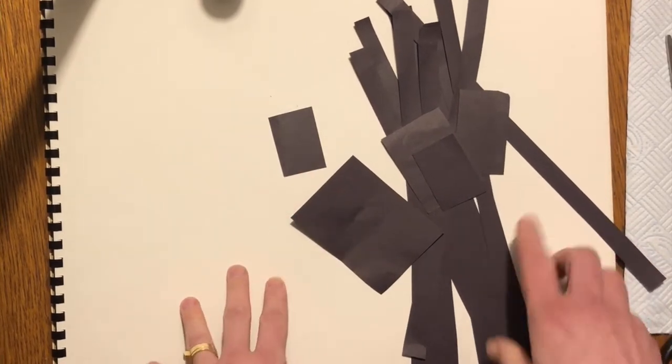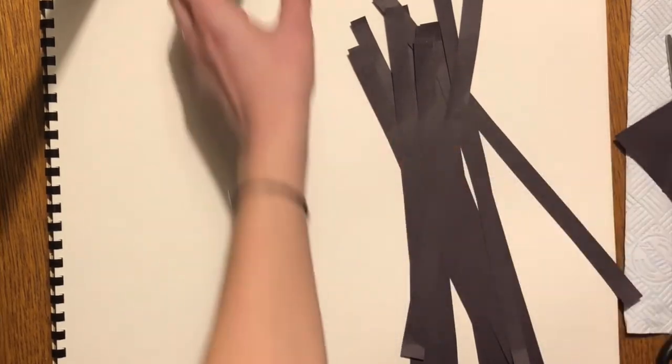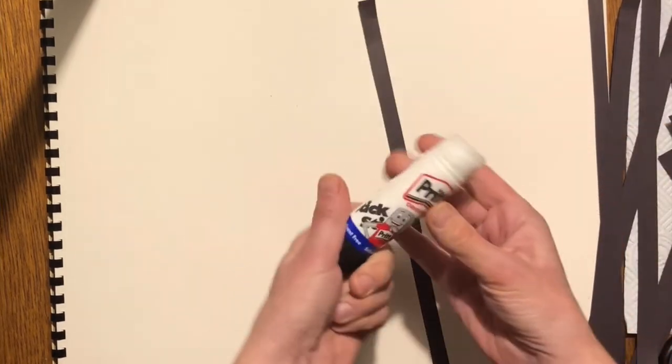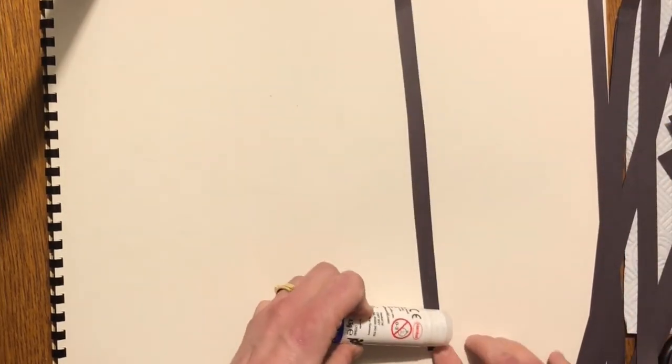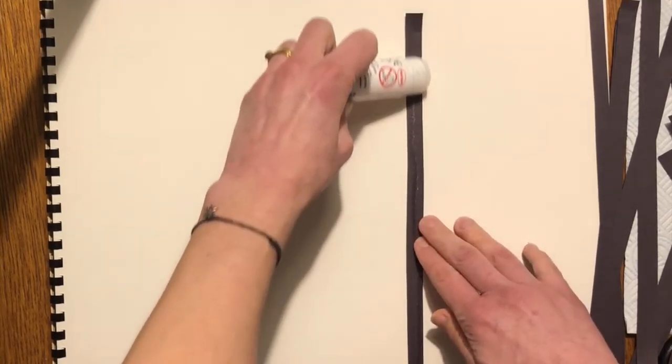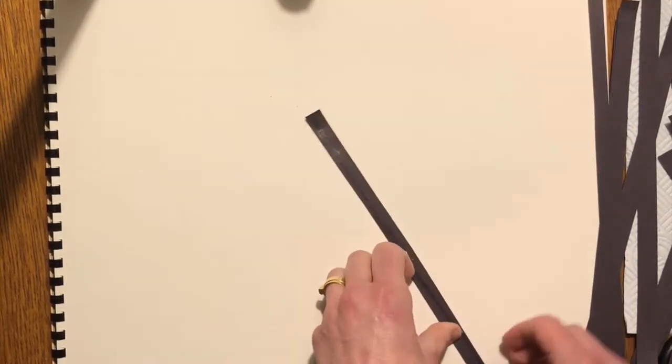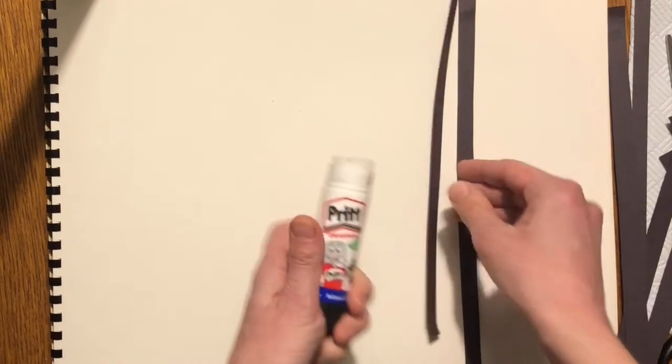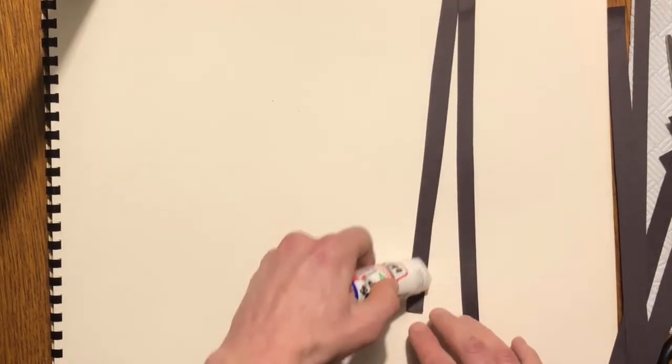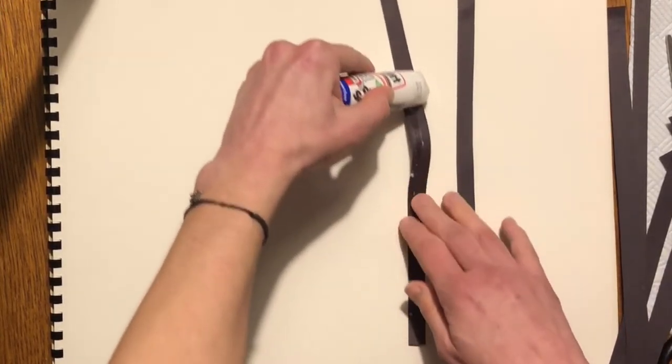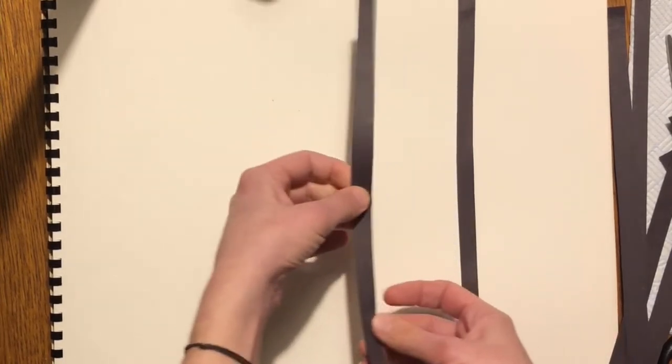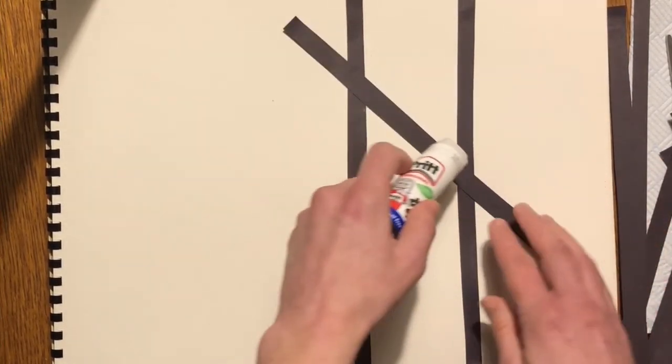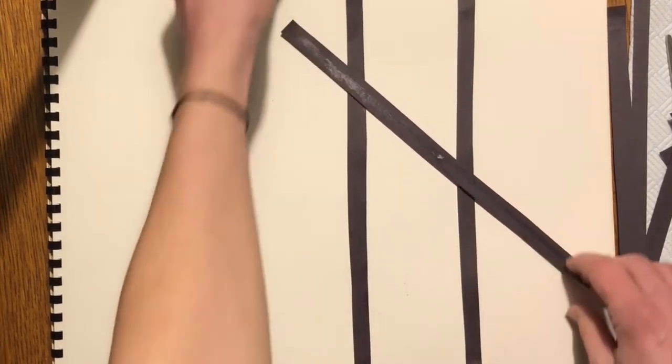Next, glue your shapes to make a grid like Mondrian. Hold your glue sideways. Make some vertical lines and some horizontal lines.